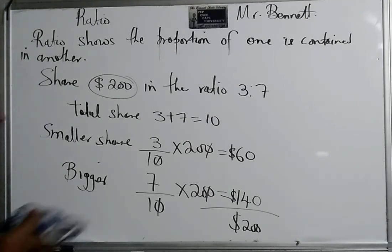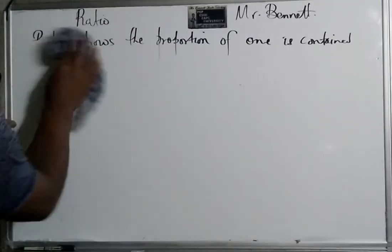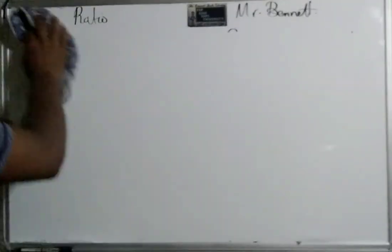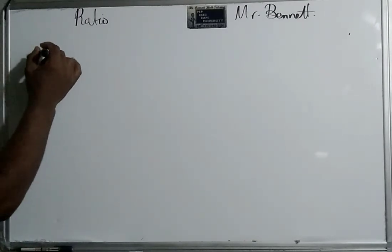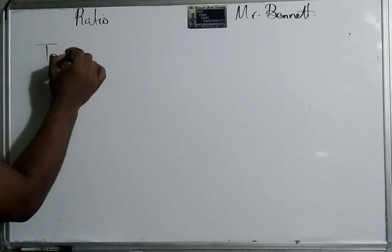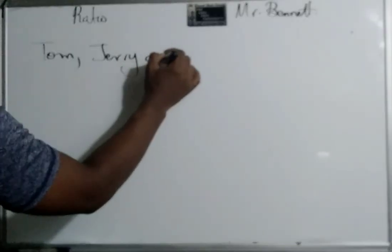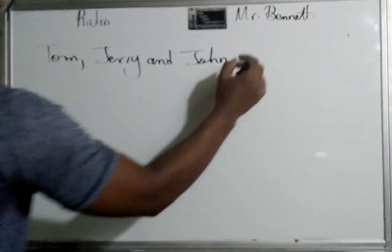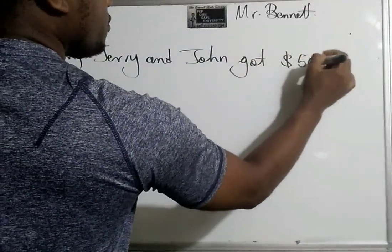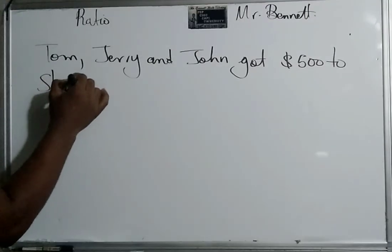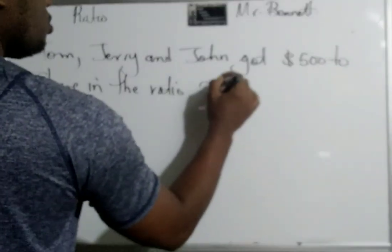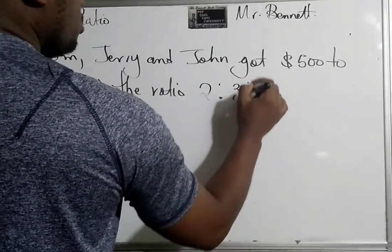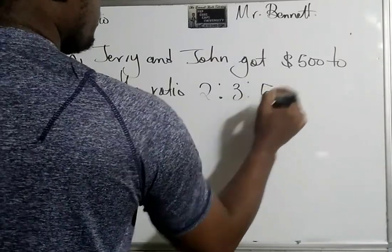What if the money is shared between three persons? Would the principle change? Let's see. So now we're going to look at when it is shared between three persons. Let's just look at this now. Let's just put some names in it. So Tom, Jerry, and John got five hundred dollars to share in the ratio 2 to 3 to 5.